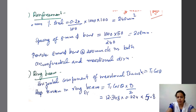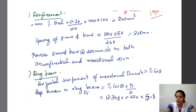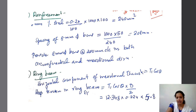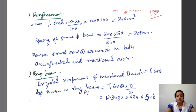Since stresses are within limits, we provide minimum reinforcement of 0.24% (for Fe 415). Using 8 mm diameter bars, the spacing works out to approximately 208 mm. We provide 8 mm bars at 200 mm center-to-center in both the circumferential and meridional directions.